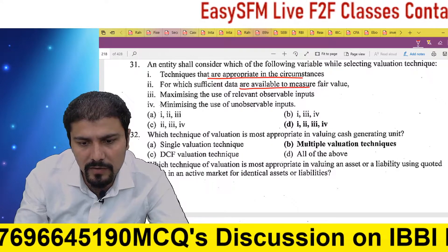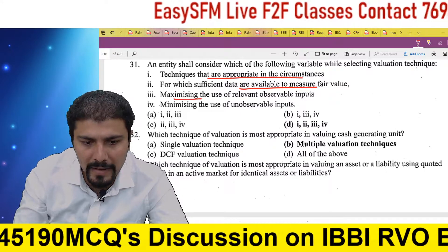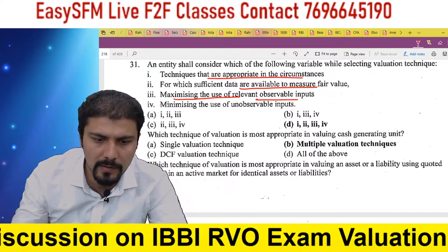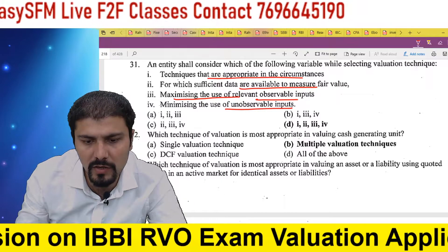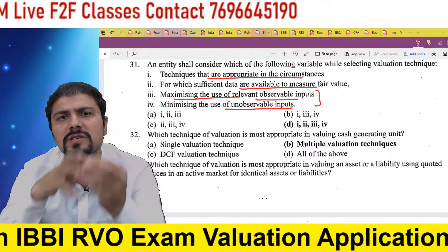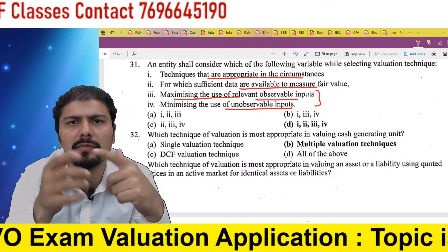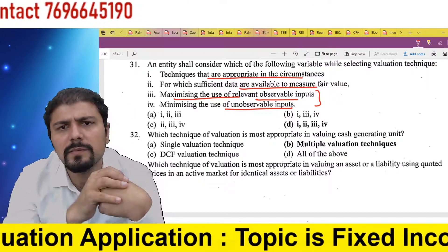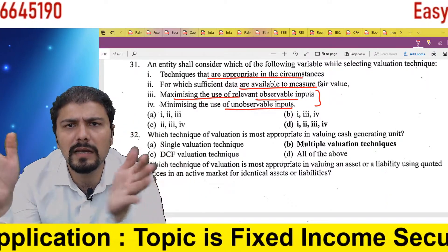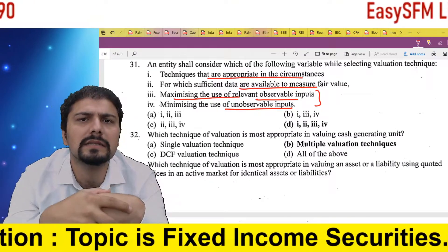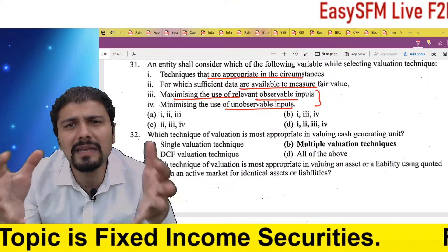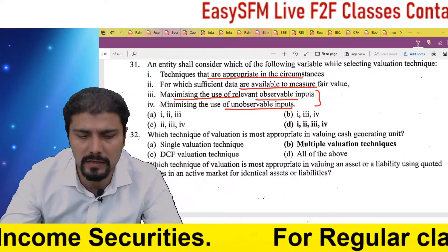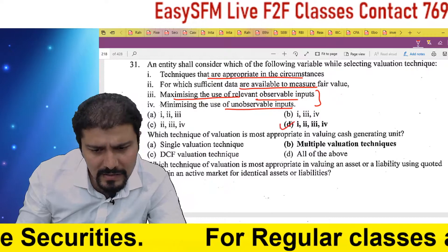For which sufficient data are available to measure fair value, maximizing the use of relevant observable inputs and minimizing the use of unobservable inputs. This means you should use as many Level 1 and Level 2 inputs as possible from the hierarchy — more observable, market-derived information — and minimize the use of inputs that cannot be observed in the market. The correct answer is all four should be considered.